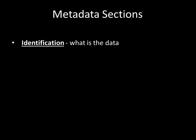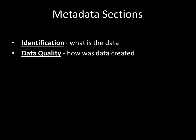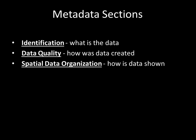Common sections of metadata files include: Identification, or what is the dataset; Data Quality, or how the dataset was created; and Spatial Data Organization, or how is the data shown — in terms of vector data such as points, lines, and polygons, or raster data such as a grid of cells, or some other format.